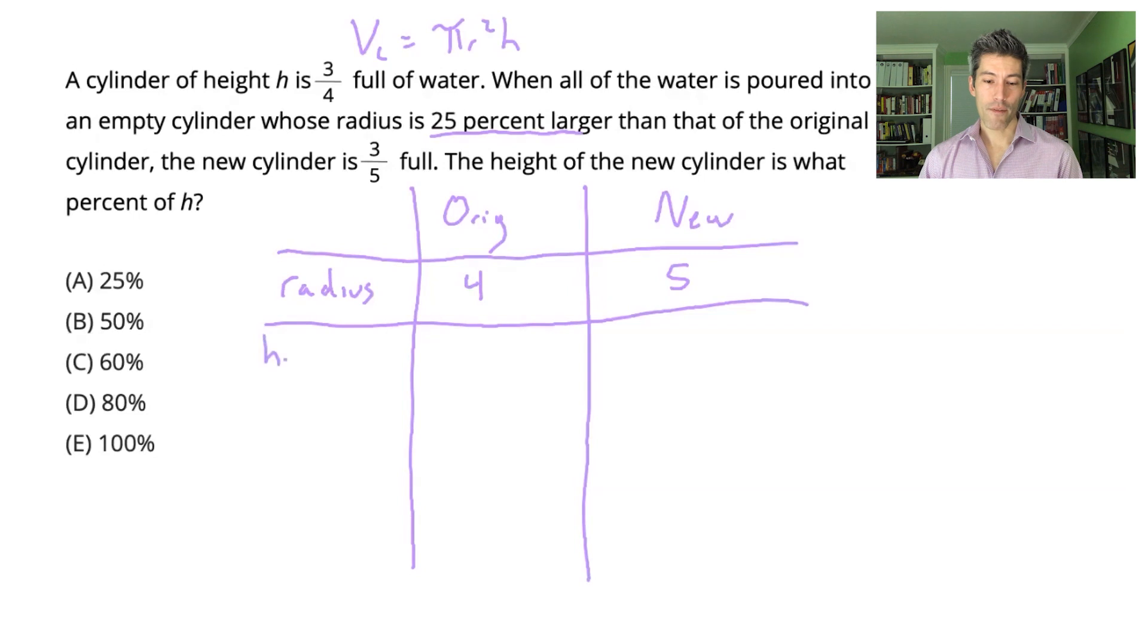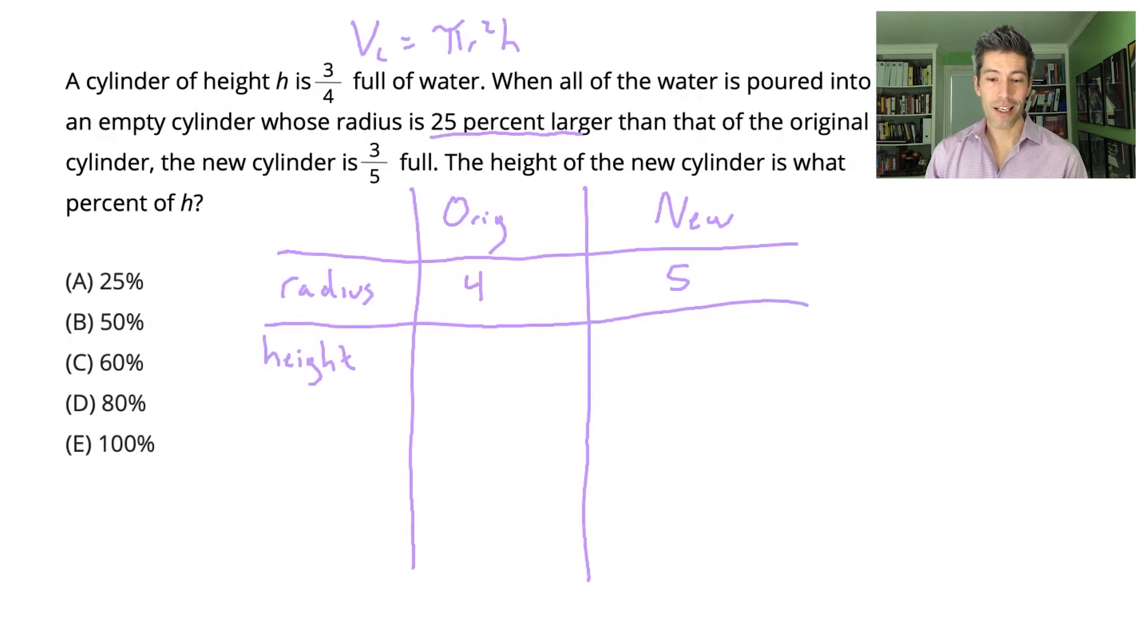The next thing I'm going to do is try to give myself some information about the heights of these cylinders. It tells me the height of the original one is h. And eventually I'm going to have to figure out how the new cylinder's height relates to the original cylinder's height. And these relationships are in percentages. When I see percentages, I like to use 100 as a smart number. If I say the original cylinder's height is 100, and then I find out that the new cylinder's height is 50, I'll know the new cylinder's height is 50% of 100. So eventually I'll end up with a value here, and I will relate it back to 100.